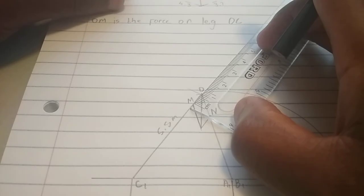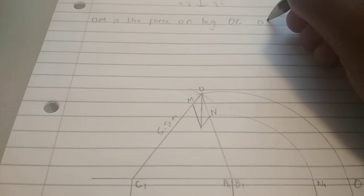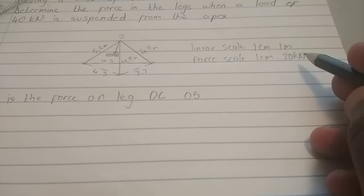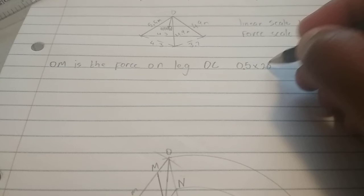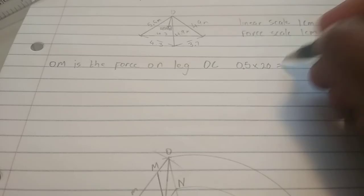O-M is about 0.5. 0.5. Now, remember our scale is 1 is to 20. This is 0.5 centimeters. So, we need to multiply it by 20. We need to multiply by 20 in order to convert it to the force. It becomes 10 kilonewtons.